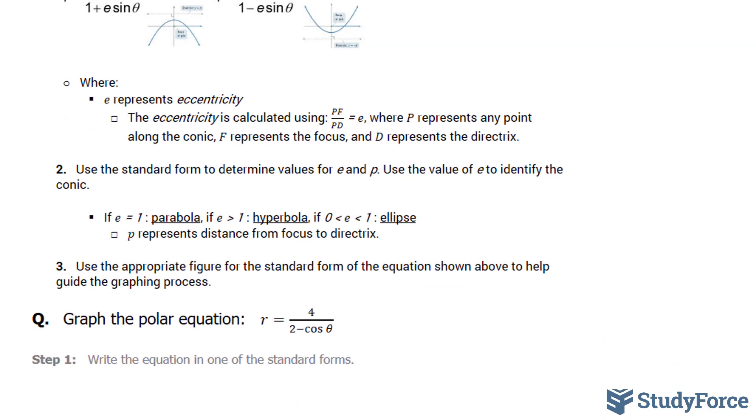After step number one, you have to use the standard form to determine the value of e and p. That's important because by knowing what e is, you can determine what type of conic it is, whether it's a parabola, hyperbola, or ellipse. And little p is related to the directrix, which is equally important when it comes to graphing.